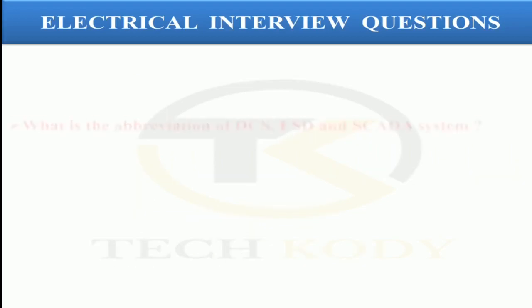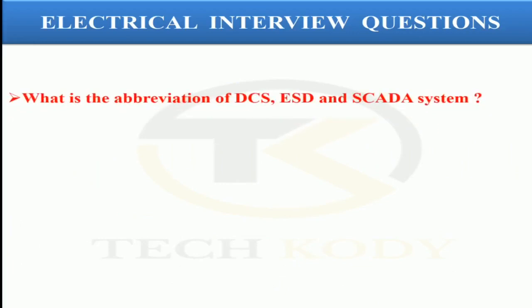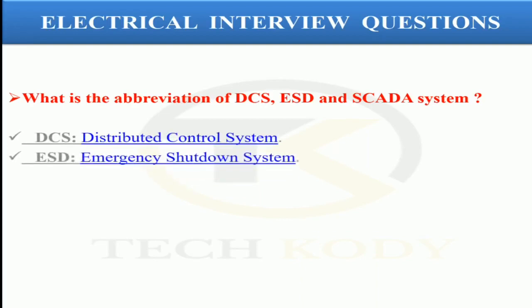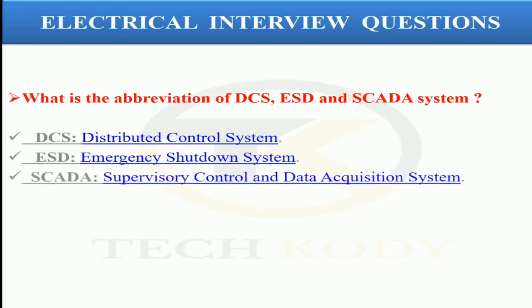The next question is: what are the abbreviations of DCS, ESD, and SCADA? DCS stands for Distributed Control System. ESD stands for Emergency Shutdown System. SCADA stands for Supervisory Control and Data Acquisition System.